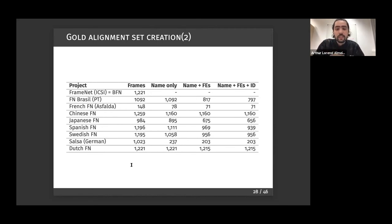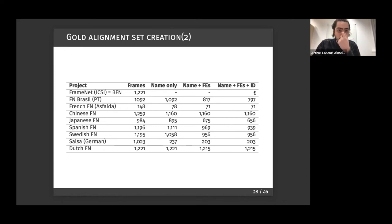Here is the table of final gold alignment sets and their sizes. For FrameNet Brazil, for example, there are 1,092 frames, of which 597 are in the gold set. We don't have a gold set for Berkeley FrameNet itself because all the other FrameNets are being aligned to it, so it doesn't make sense to define its gold set.